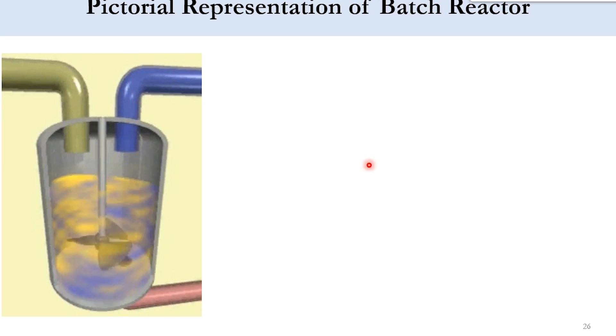Now if you see the batch reactor, this is the pictorial representation of it. The feed is placed in this reactor, as you can see here the feed is stopped, and then this mixer starts working, the reaction takes place in the system, and finally after some time when the product is formed it is withdrawn from the system. So it is an unsteady state system because with time there are changes, but it is a well mixed system.